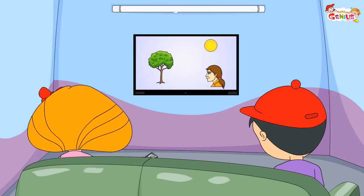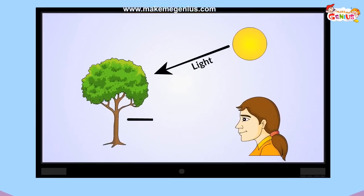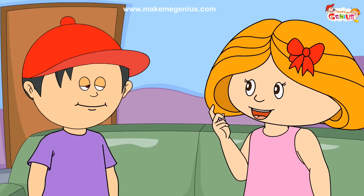Look here. Can you see that the light from the sun hits the tree and it gets reflected? And due to this reflected light, we can see the tree.